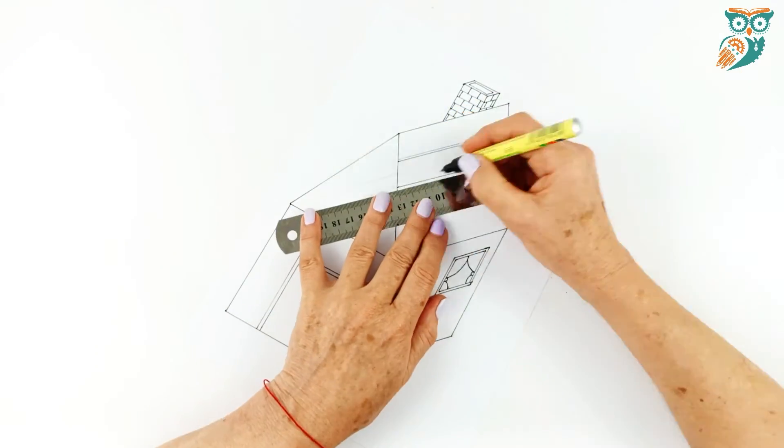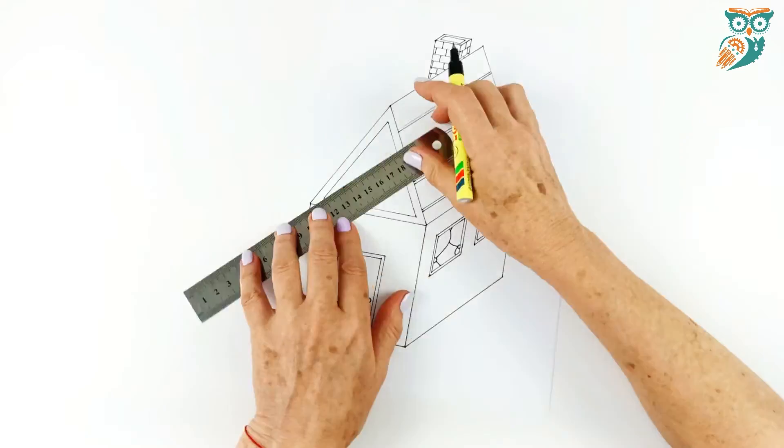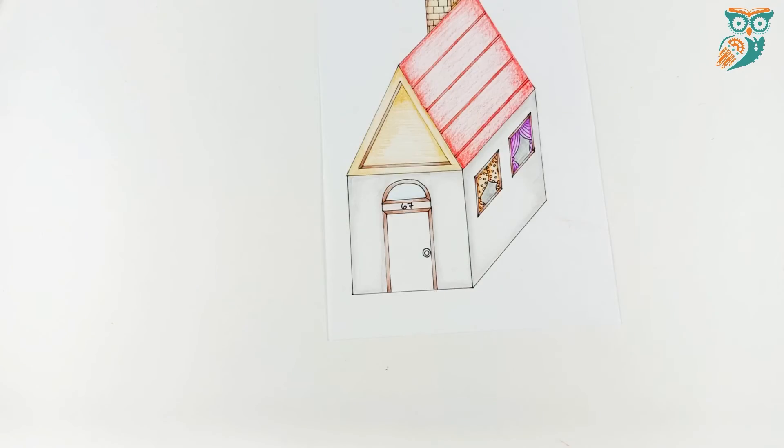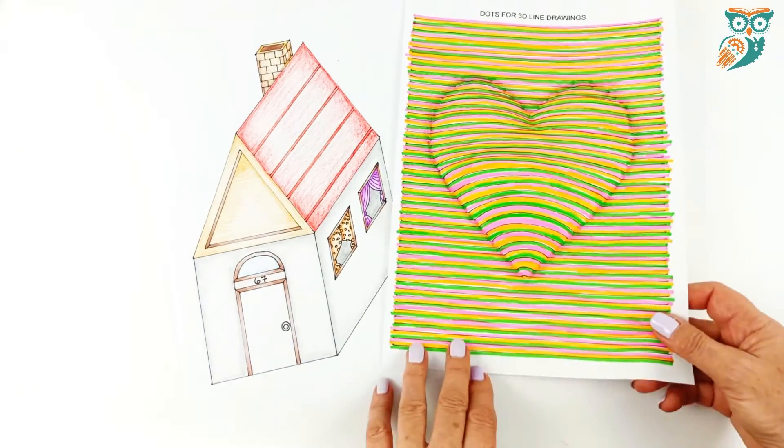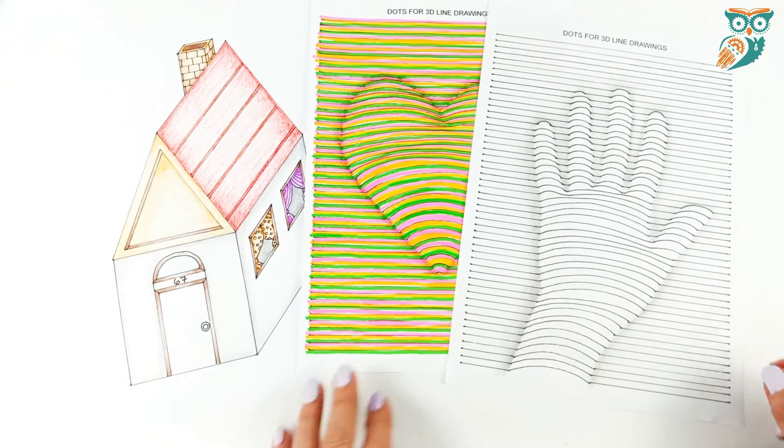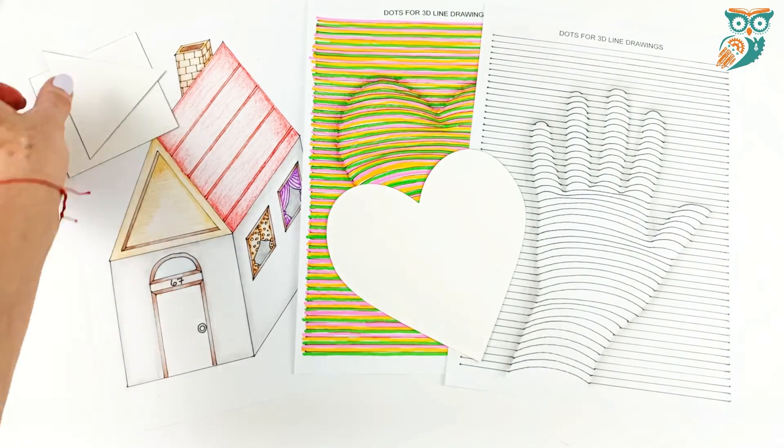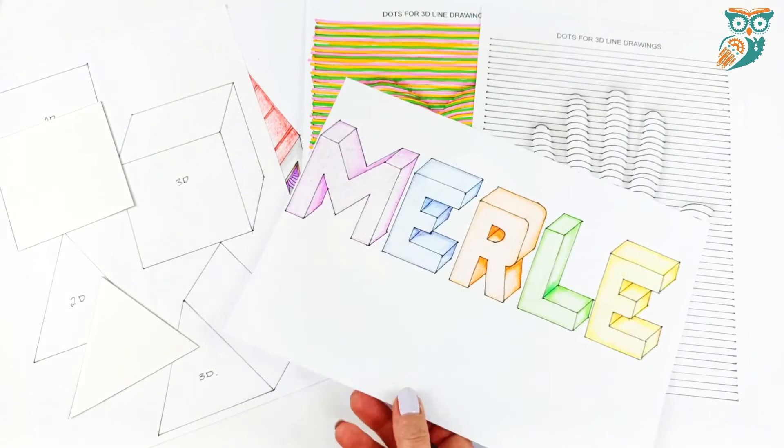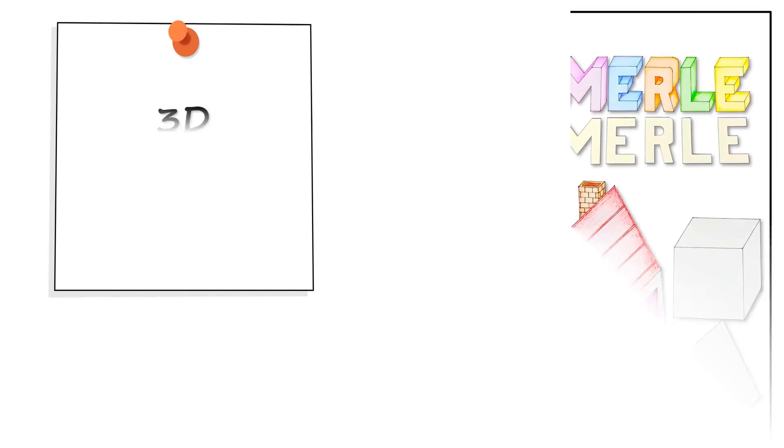You can do this however you want. Here we're adding little shingles on the roof. And just go around and add any details to make your house perfect. So this is a really fun activity that combines science, math and art to create 3D images. And it is so popular with students.